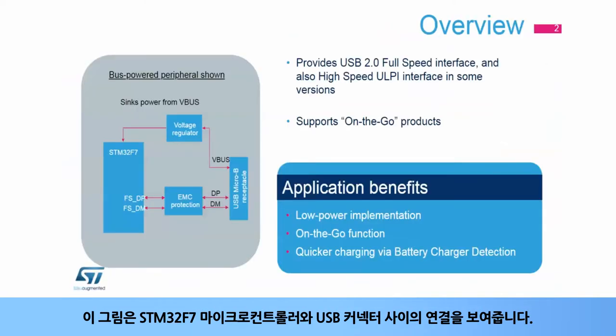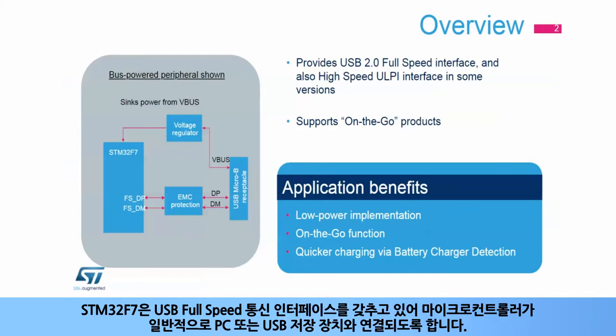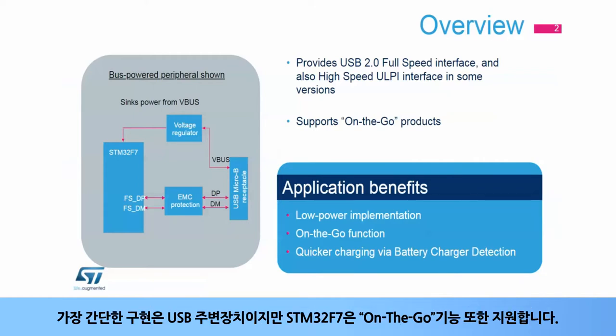This figure shows the connections between an STM32F7 microcontroller and a USB connector. The STM32F7 features a USB full-speed communication interface, allowing the microcontroller to communicate typically with a PC or a USB storage device. The simplest implementation is a USB peripheral device.